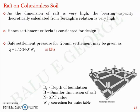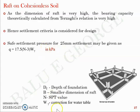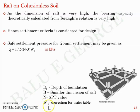When a 25 mm settlement is assumed, the safe settlement pressure is given by 17.5 × (N − 3) × Wγ in kilopascals, where DF is the depth of the foundation, B is the smaller dimension of the raft, N is the corrected SPT-N value, and Wγ is the water table correction factor.